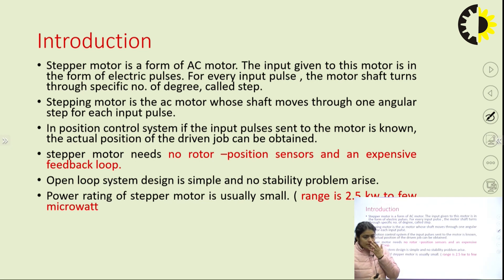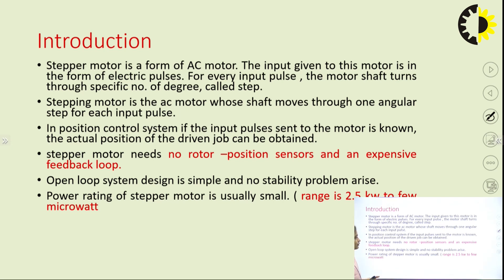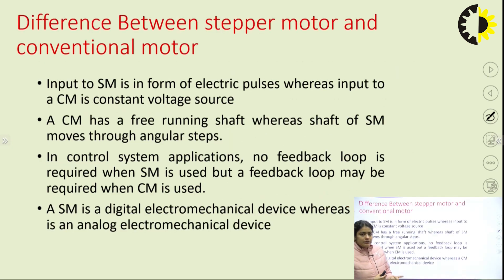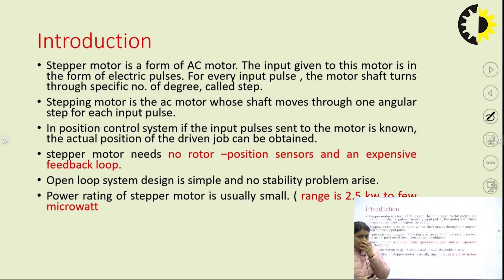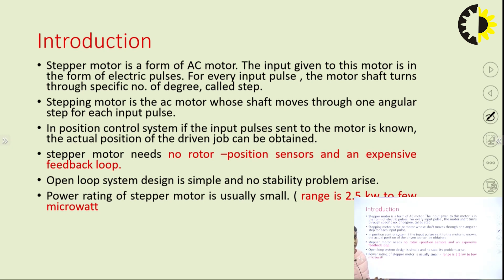The input to the stepper motor is in the form of pulses, and as we apply the pulses the motor rotates in steps. The stepping motor is an AC motor whose shaft moves through one angular step for each input pulse. In a position control system, if the input pulses sent to the motor are known, the actual position of the driven load can be obtained. This motor does not require any position sensor or feedback loop — it can work on a simple open loop system with no stability issues.